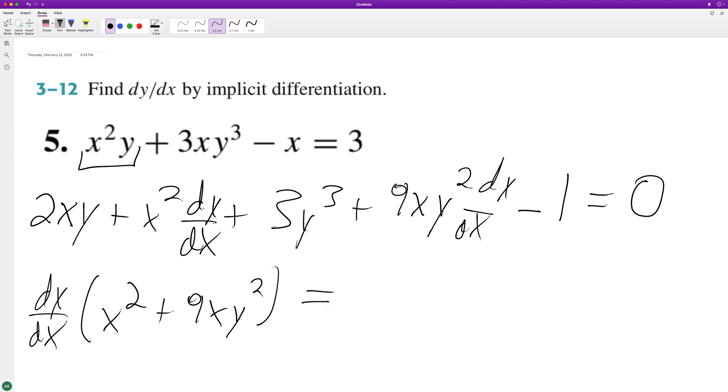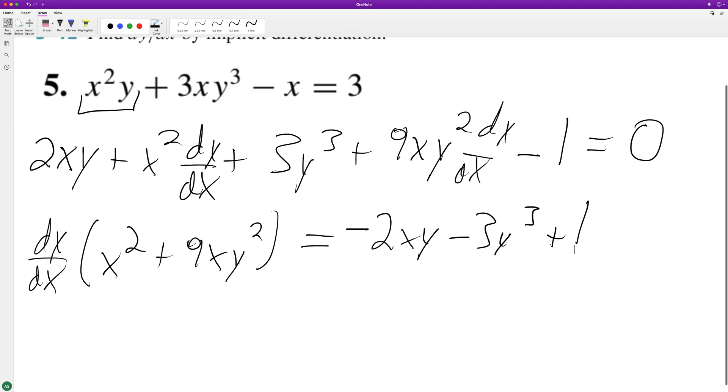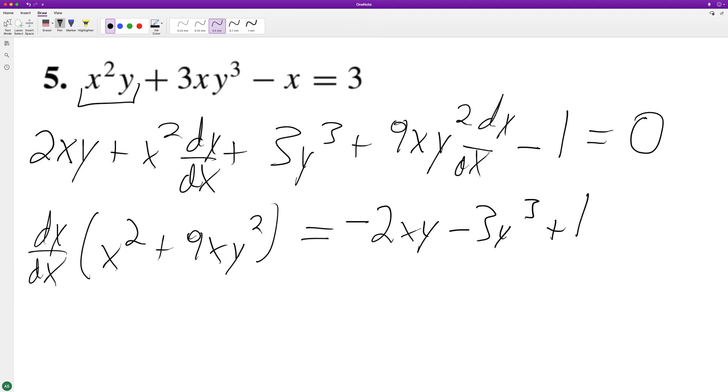This equals negative 2xy minus 3y³ plus 1. We usually put positive values first, but that's fine. Divide through, so dy/dx equals 1 minus 2xy minus 3y³ all over x squared plus 9xy squared. And that's it.